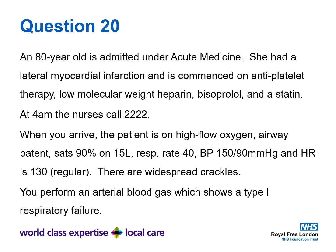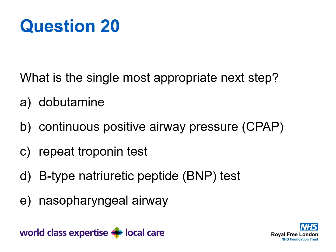Question 20. An 80 year old is admitted under acute medicine. She had a lateral myocardial infarction and is commenced on anti-platelet therapy, low molecular weight heparin, bisoprolol and a statin. At 4am, the nurse calls a cardiac arrest. When you arrive, the patient is on high flow oxygen, airways patent, sats 90% on 15 litres, respiratory rate 40, BP 150 over 90, heart rate 130 regular, and there are widespread crackles on auscultation. An arterial blood gas shows type 1 respiratory failure. What is the single most appropriate next step? A: Dobutamine, B: continuous positive airway pressure (CPAP), C: repeat troponin test, D: BNP test, or E: insert a nasopharyngeal airway.